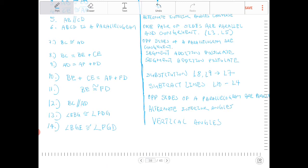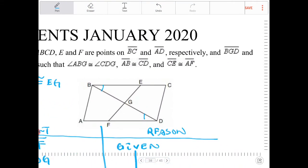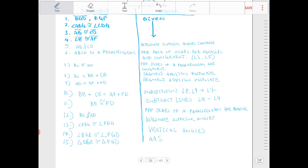And now I have everything in place. For number 15, I can then say triangle BGE is congruent to triangle FGD because of angle, side, angle. So, how is that angle, angle, side? Because I've just proven these two angles are congruent, and then these sides here are congruent. That's angle, angle, side.